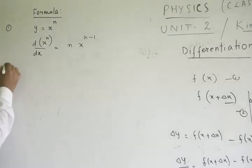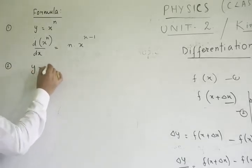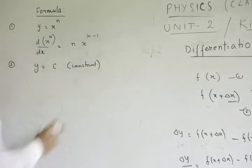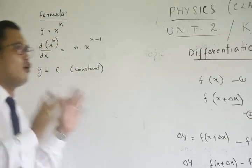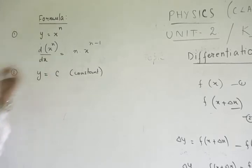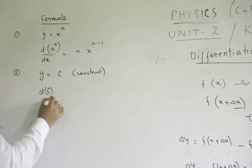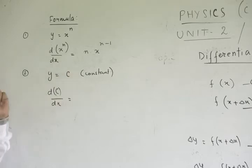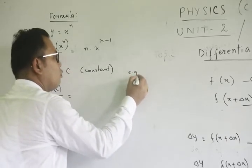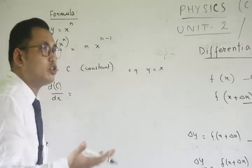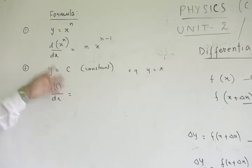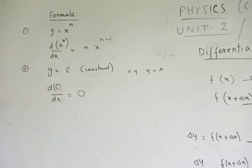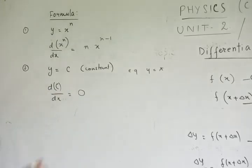Number 2: if y is equal to c, some constant — y is a constant function. The derivative of c with respect to x is zero. For example, y equals pi, which is 3.14, a constant. The derivative of any constant is zero.